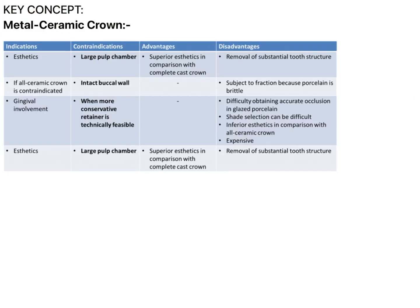This key concept is very interesting. The indications of metal ceramic crown relate to aesthetics — if an all-ceramic crown is contraindicated, the metal ceramic has superior aesthetics compared to full metal. All-ceramic is aesthetically better than metal ceramic. Indications include cases with gingival involvement and minimal periodontal involvement. Contraindications include large pulp chamber and an intact buccal wall.